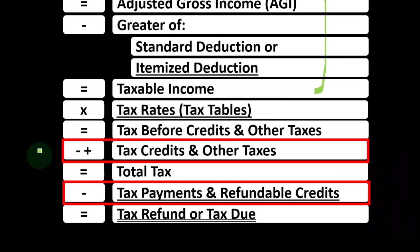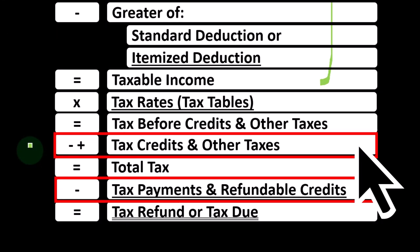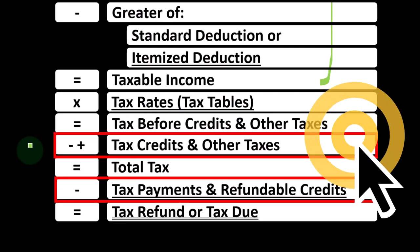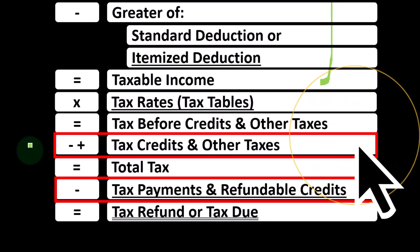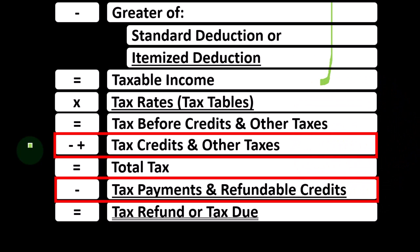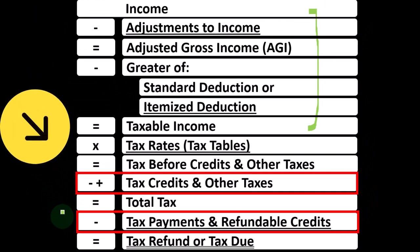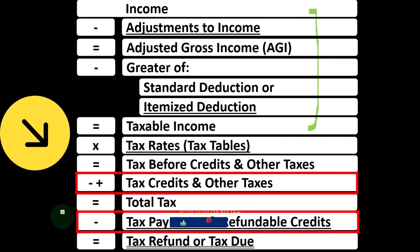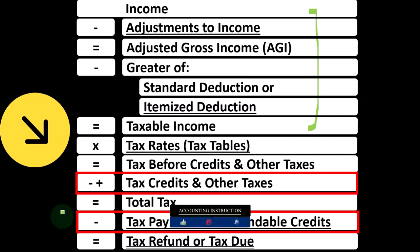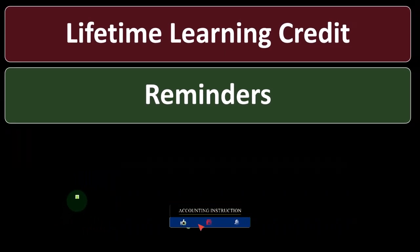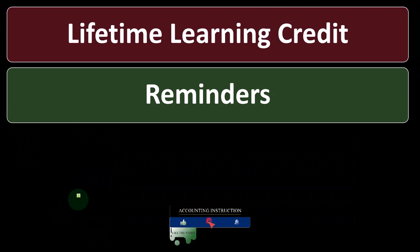Non-refundable credits do not bring the tax liability below zero, whereas refundable credits can — meaning that the refundable portion uses the tax code more like a benefit or welfare program at that point, as opposed to a straight income tax system.